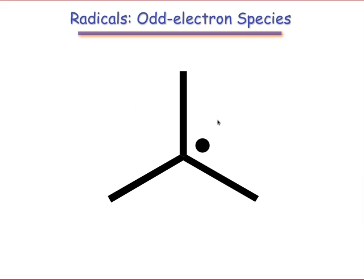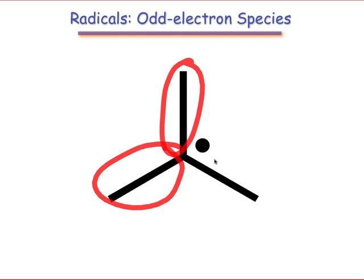A quick look at the Lewis structure of a simple free radical provides insight into its expected reactivity. Notice that around the radical center there are only seven electrons, two each from the three single bonds and one from the unpaired electron. Thus, we would expect the radical to be an electron-deficient species, and this is what chemists observe.